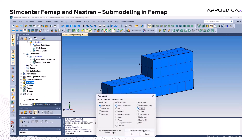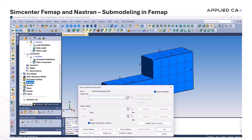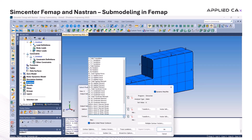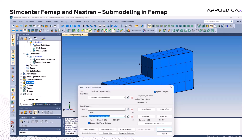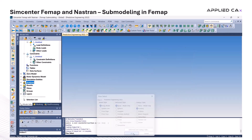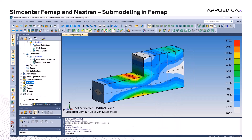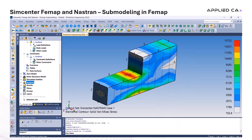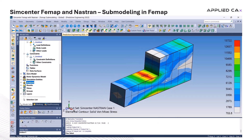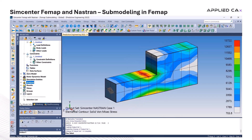Since our global model is relatively simple with only about 60 elements, the analysis runs very quickly. Once it's done, we can move on to verifying the output and checking the results for the initial global model.